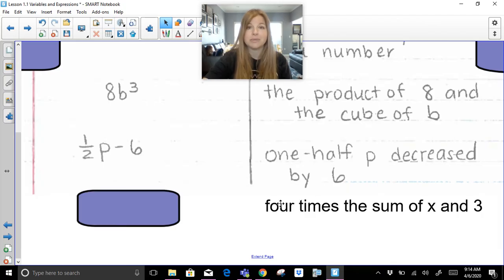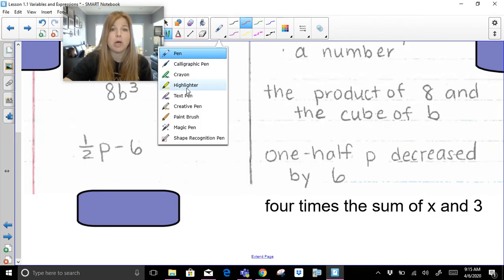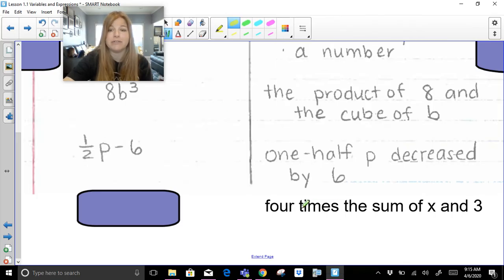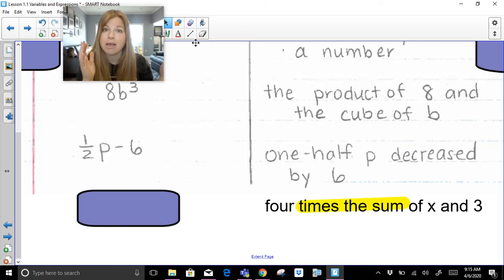Last one here. 4 times the sum of x and 3. When you have 4 times an entire sum, or if it says 4 times the difference, that means I have to do 4 times the entire amount. This entire amount says x plus 3. So if I have to do 4 times the entire amount of x plus 3, not just the x, not just the 3, but the whole thing, what do you think I need to use here?